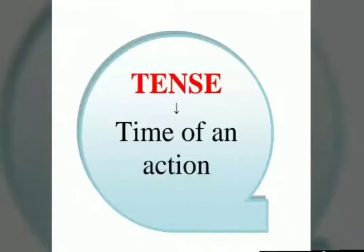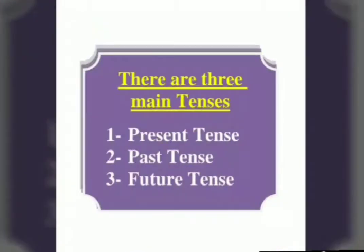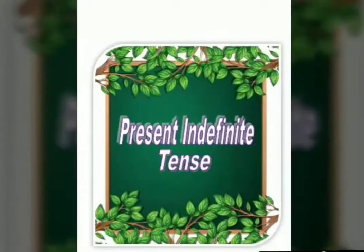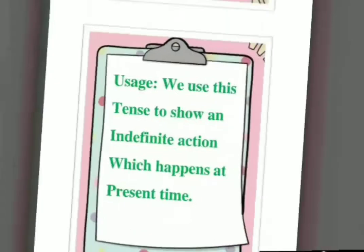So what is tense? Time of an action. Do you know how many tenses do we have? We have three main tenses: present tense, past tense, and future tense. So today we are going to do present tense. It is also called present indefinite tense. So what is the definition of present indefinite tense? This tense is used to show an action which happens at present time. Now we will see its structure formulas for positive, for negative, and for interrogative sentences.